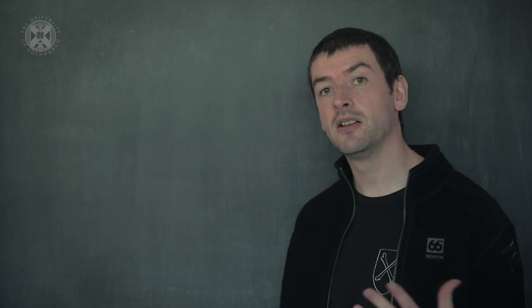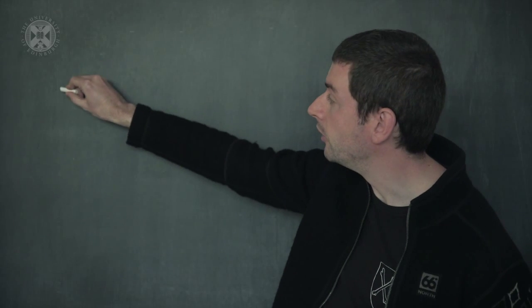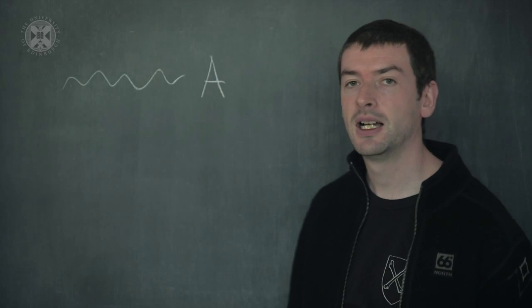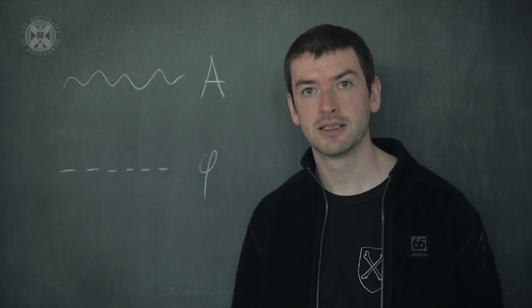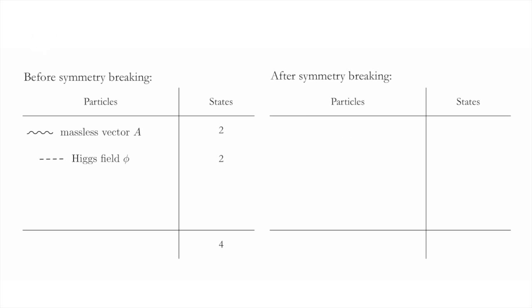Which we call the standard model. Let's recap with a simple version of the Higgs mechanism, which involves a vector field A and a scalar field phi, which I'll draw with dashed lines. Phi is the Higgs field in this simple model. The vector field A can fluctuate in two different directions — these are its two different polarizations — so there are two kinds of particle states for the massless vector field. The scalar field in the simplest model also had two states: phi 1 and phi 2. So the total number of states in this model is 4.